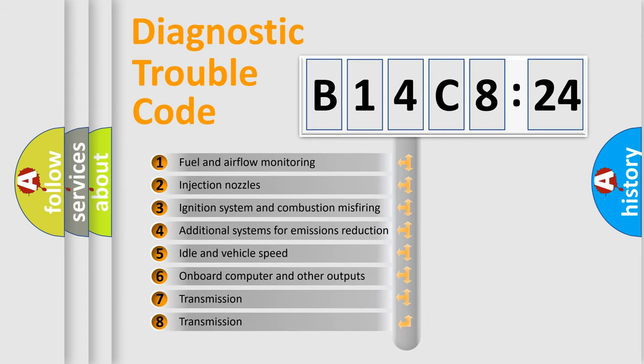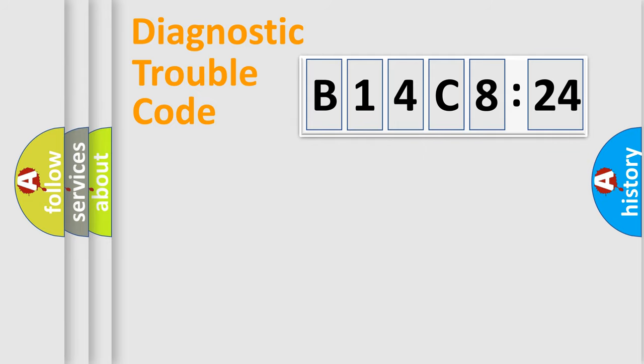The third character specifies a subset of errors. The distribution shown is valid only for the standardized DTC code. Only the last two characters define the specific fault of the group.